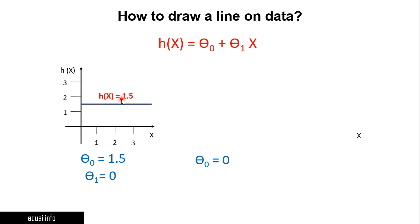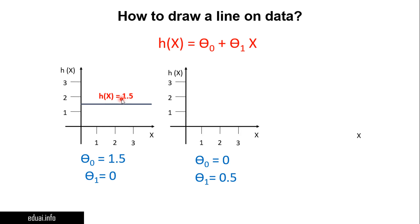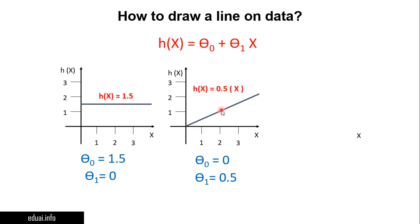If θ₀ = 0 and θ₁ = 0.5, the θ₀ term becomes zero. The y-intercept is 0, so the line crosses at the origin. With θ₁ = 0.5, the slope is 45 degrees, so the line looks like a diagonal passing through the origin at 45 degrees.